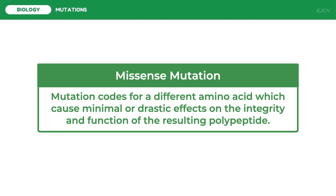Missense mutations code for a different amino acid, which can cause minimal or drastic effects on the integrity and function of the resulting polypeptide. Such a mutation may have little effect on the protein if the new amino acid has properties similar to those it replaces, or if it is in a region of the protein where the exact sequence of amino acids is not essential to the protein's function.